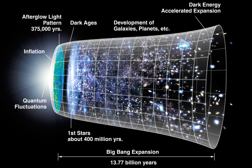Astronomers also observe the gravitational effects of dark matter surrounding galaxies. Though most of the mass in the universe seems to be in the form of dark matter, the Big Bang theory and various observations seem to indicate that it is not made out of conventional baryonic matter — protons, neutrons, and electrons — but it is unclear exactly what it is made out of.